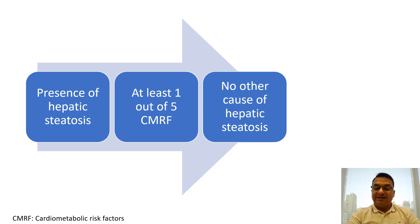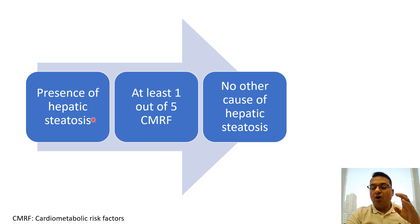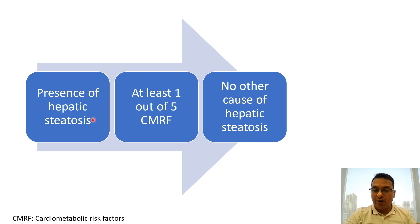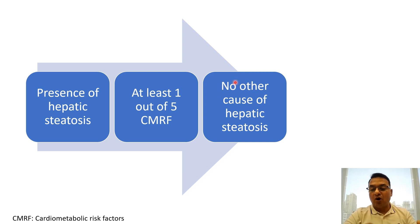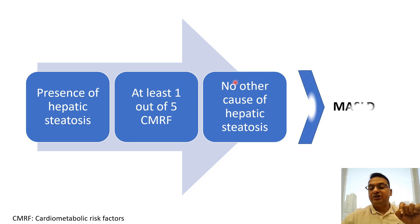So how do we diagnose MASLD? First, confirm the presence of hepatic steatosis on imaging — like ultrasonography, MR elastography, transient elastography, or on biopsy. Then confirm the presence of at least one out of the five cardiometabolic risk factors. Then rule out other causes such as excessive alcohol consumption or other liver disorders. Then you would say the patient is suffering from MASLD — metabolic dysfunction associated steatotic liver disease.